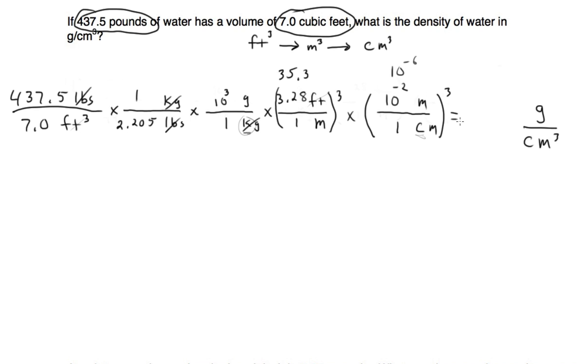You know the answer to this. It has to be 1 because it's saying what's the density of water. We know the density of water in grams per centimeter cubed is 1. Make sure when you put it in your calculator, you get 1.